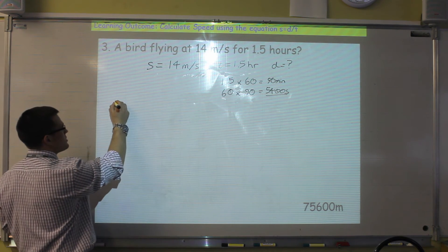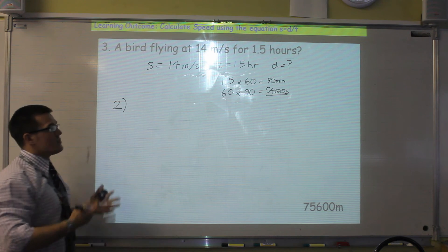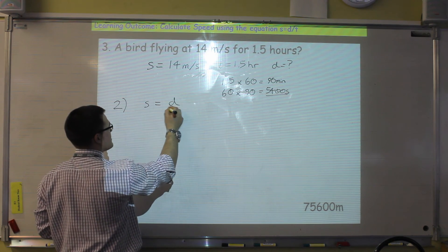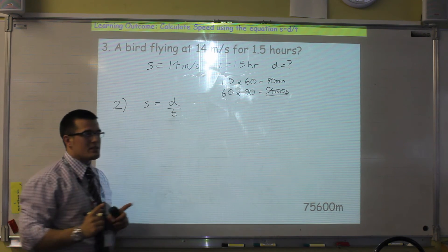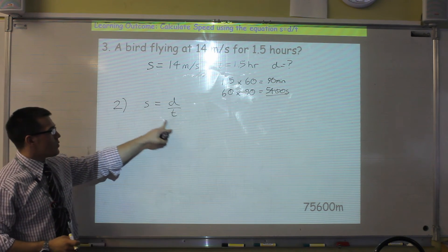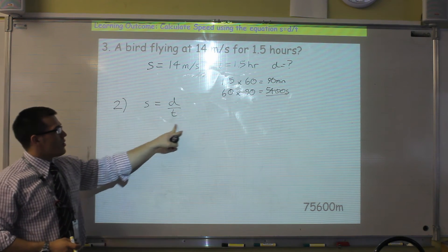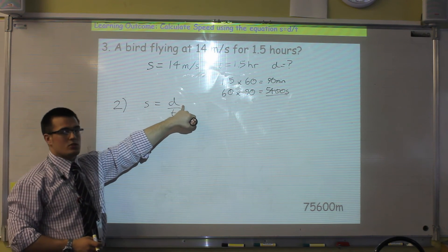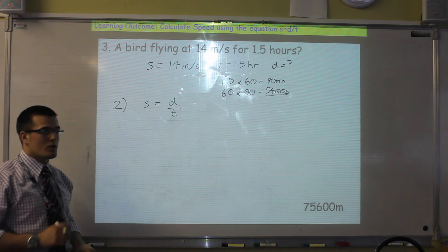So step number two is to put the equation. Now we know that we're using an equation for speed. So speed is equal to distance divided by time. But this time, this equation is organised so that we can calculate speed. And we need to calculate the distance. So we have to rearrange it. Now there are two ways of doing that.